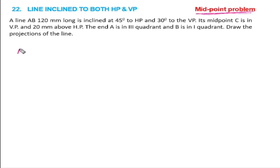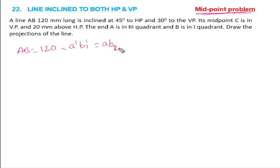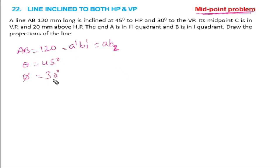AB is equal to the true length, which is 120mm, equal to AB2. The angle with HP is 45 degrees — that is the value of theta — and phi is 30 degrees with VP.